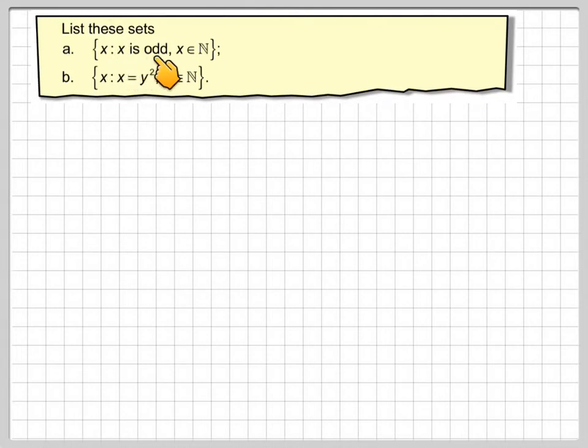So the first one we've got x such that x is odd, x is a natural number, and remember the natural numbers are the positive integers. So we've got x such that x is odd, x belongs to N.